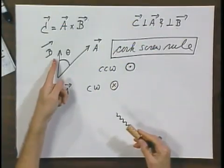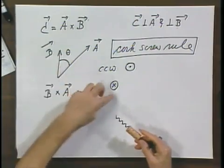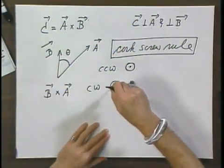I have here a corkscrew and I have here a cork. If I turn, as seen from this side, clockwise, then the screw goes into the cork. I go this way — clockwise from this direction — and it goes in there. When I go from B to A, I rotate my corkscrew clockwise and the corkscrew goes in.